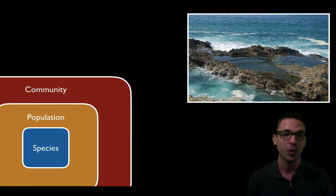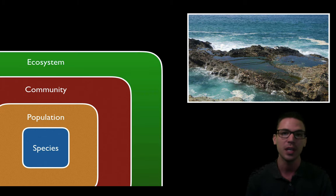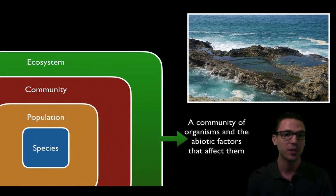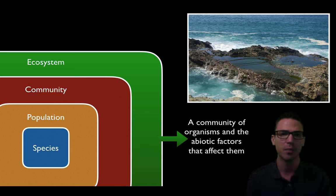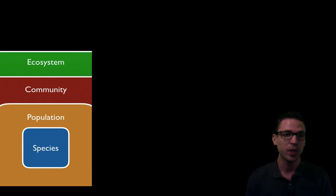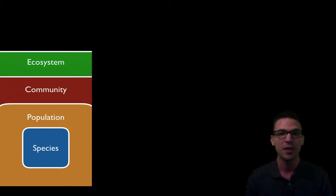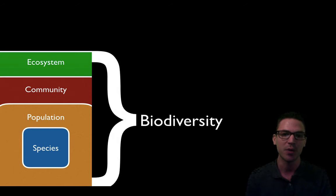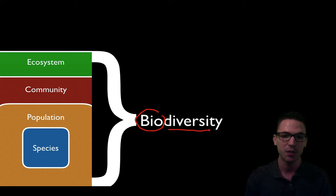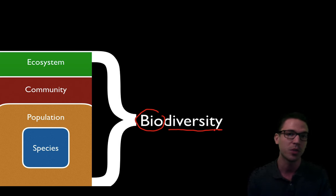Once we talk about the habitat with its community of organisms, we get to the widest level: the ecosystem. An ecosystem is a system of not only the organisms or the community that lives there, but also the abiotic — physical and chemical — factors that affect them. So we go from species at the smallest scale all the way out to the ecosystem, which includes both living and non-living components. We can sum all these differences up with the term biodiversity — bio meaning life, diversity meaning differences. Some ecosystems have high biodiversity while others don't, and we'll look at why.